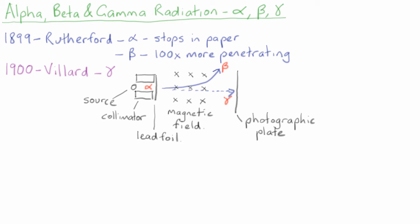Now that three different types of radiation had been identified, the race was on to try and prove what these different types of radiation were.